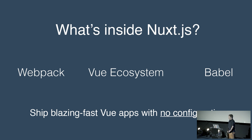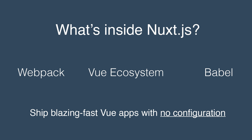So what is inside Nuxt? How is it made? Nuxt is built with Webpack, Babel, and all the Vue.js ecosystem — not just Vue, but Vue with all its ecosystem. All you need to create a full web application. And with all these packages, you will be able to ship fast Vue.js applications with no configuration, just by installing Nuxt.